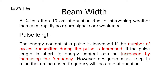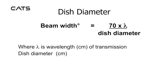The energy content of a pulse is increased if the number of cycles transmitted during the pulse is increased. If the pulse length is short, its energy content can be increased by increasing the frequency. However, designers must keep in mind that an increased frequency will increase attenuation. Beam width in degrees is equal to 70 multiplied by the wavelength divided by dish diameter, where wavelength and dish diameter are in the same units.